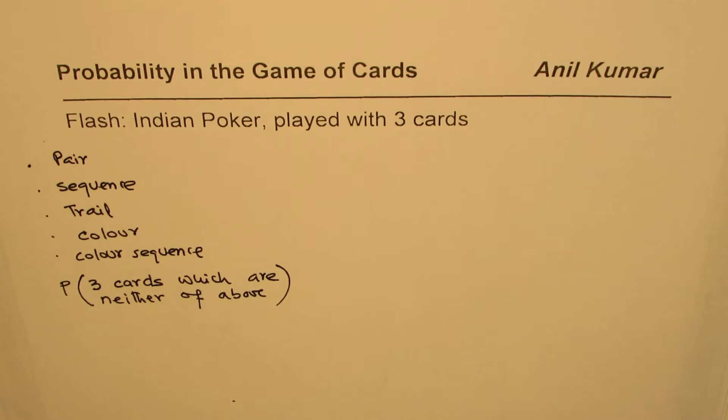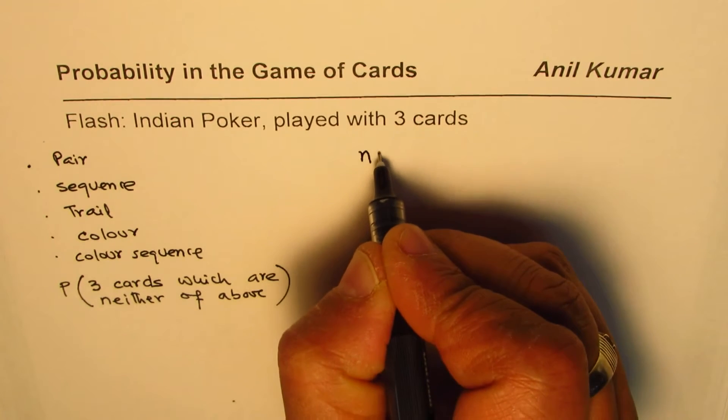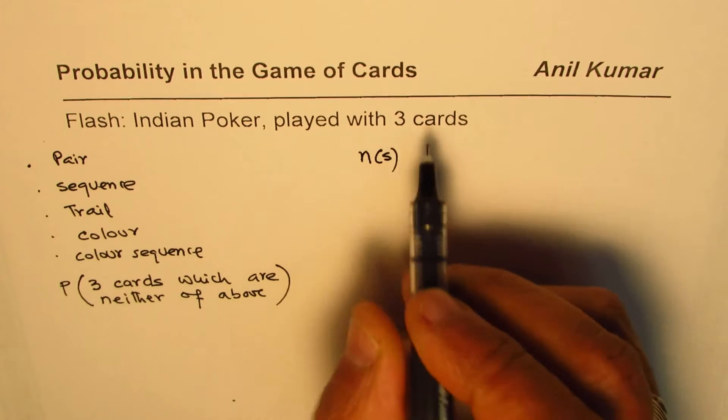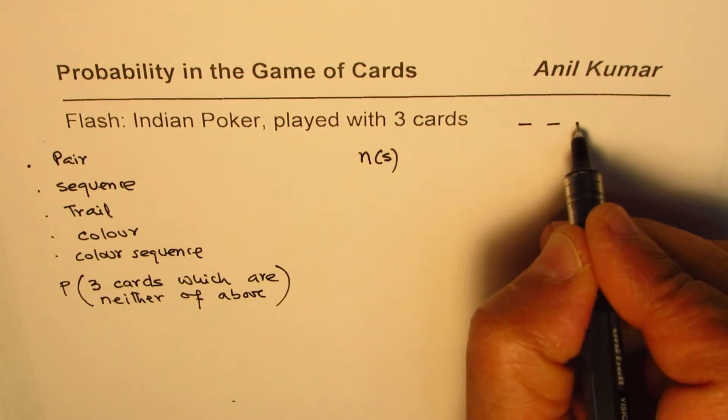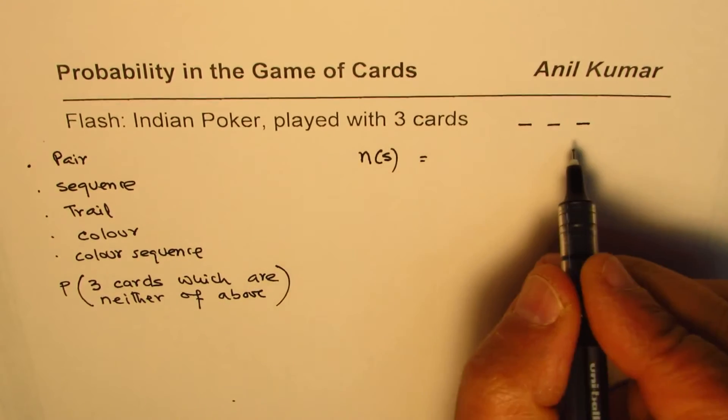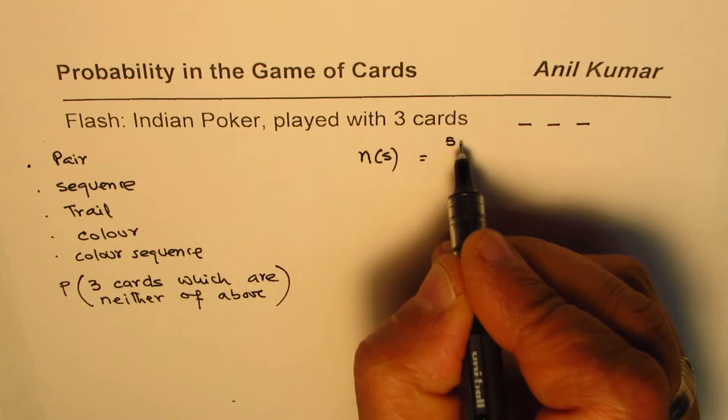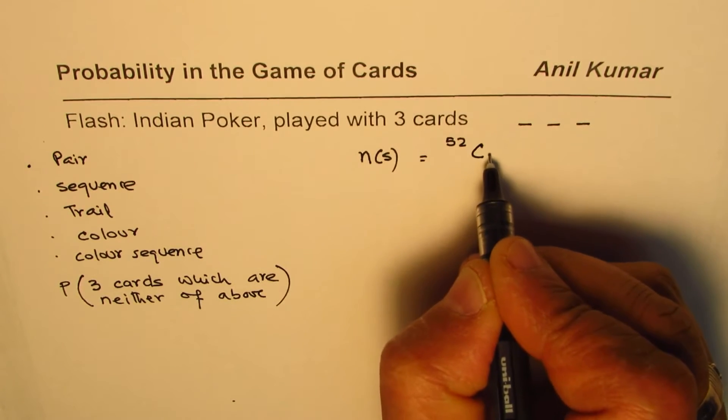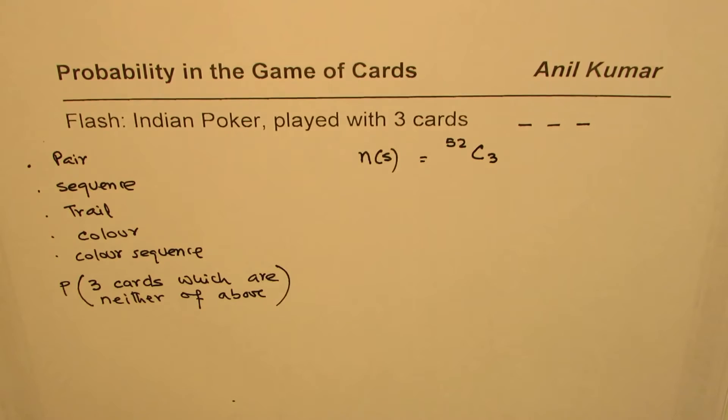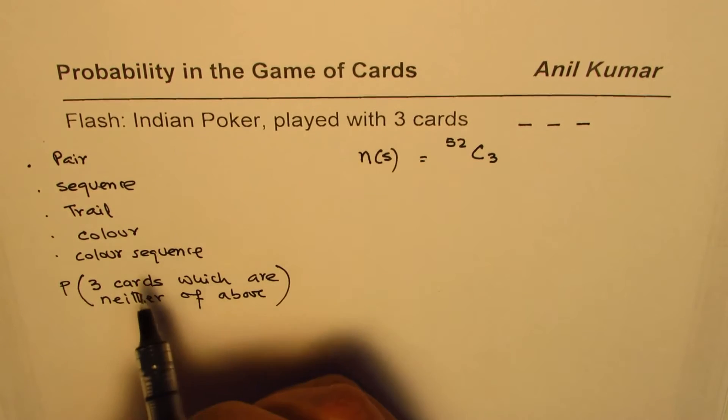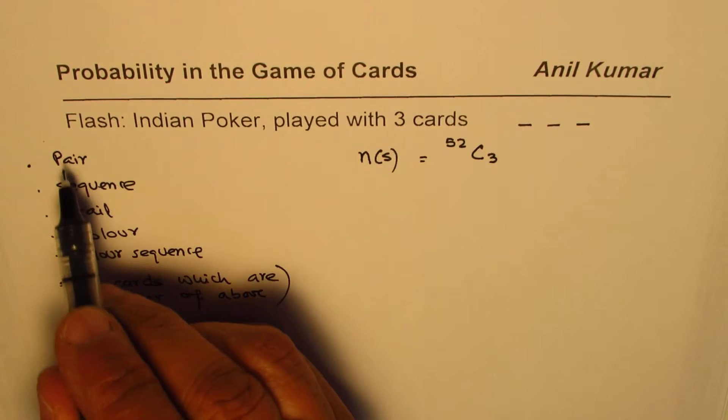That's what we'll figure out in this particular video. Now let's begin with total number of options, which is the sample space for us. Since we are distributing three cards, the game of three cards, and the deck has 52, total number of options are 52 C 3.